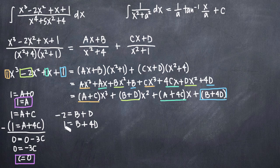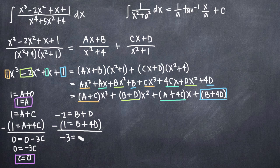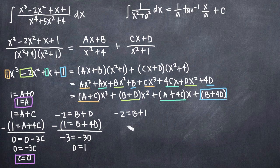I'll do the same thing to solve for B and D — subtract the second equation from the first so the B's cancel. Negative 2 minus 1 gives negative 3; B minus B gives 0; D minus 4D gives negative 3D. Dividing both sides by negative 3, D equals 1. Plugging D equals 1 back into the first equation gives negative 2 equals B plus 1, so subtracting 1 from both sides gives B equals negative 3.